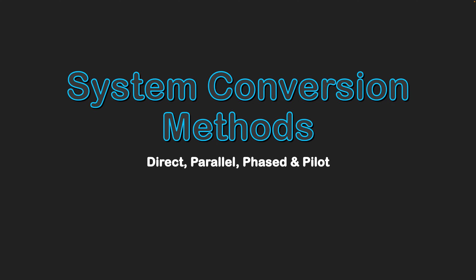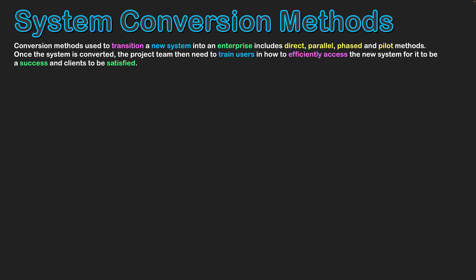System conversion methods: direct, parallel, phased, and pilot. Conversion methods are used to transition a new system into an enterprise, and this may include the methods such as direct, parallel, phased, and pilot.